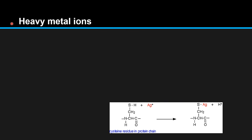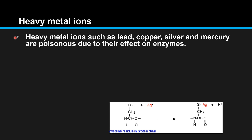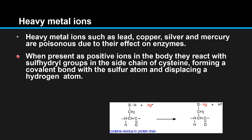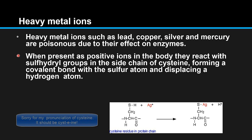The last factor that affects enzyme action is the presence of heavy metal ions. Heavy metal ions such as lead, copper, silver, and mercury are poisonous due to their effect on enzymes. When present as positive ions in the body, they react with sulfhydryl groups in the side chain of cysteine, forming a covalent bond with a sulfur atom and displacing a hydrogen atom.